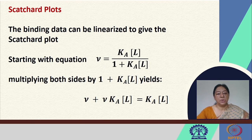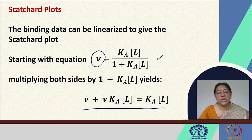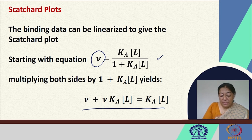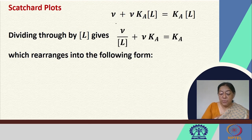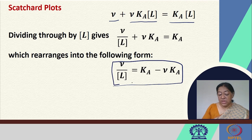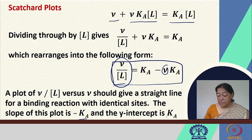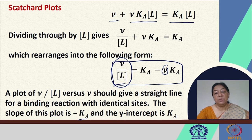Binding data can be linearized to give the Scatchard plot. Starting with the definition of nu as PL concentration divided by total protein, and performing algebraic rearrangement — where nu plus nu·Ka·L equals Ka·L — we obtain the Scatchard equation. Plotting nu/L versus nu gives a straight line whose slope yields Ka and whose intercepts provide additional binding parameters.